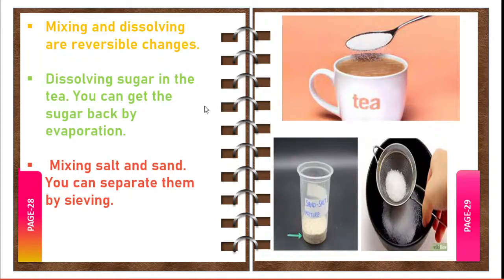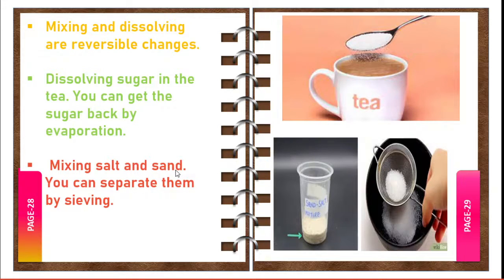Dissolving of sugar in tea is a reversible change — you can get back the sugar by the evaporation method. Mixing of salt and sand is also reversible: add water to the mixture, salt dissolves but sand does not, then through the sieving method the sand is removed, and by the evaporation method the water evaporates and the salt remains in the vessel. So mixing of salt and sand is also a reversible change.